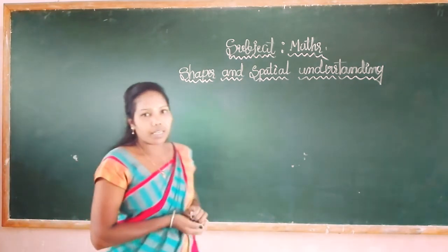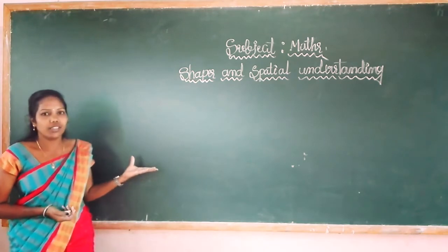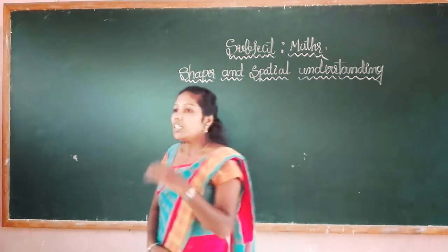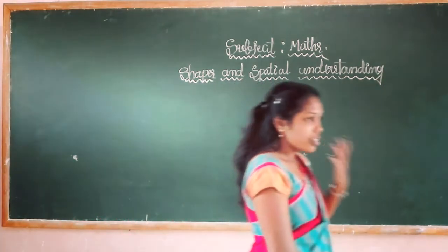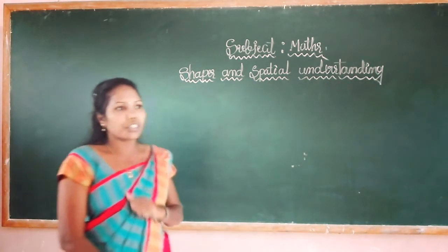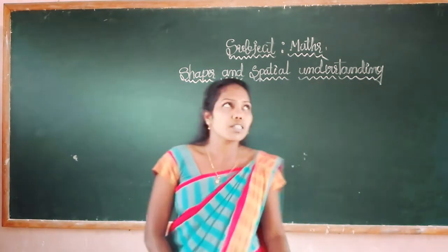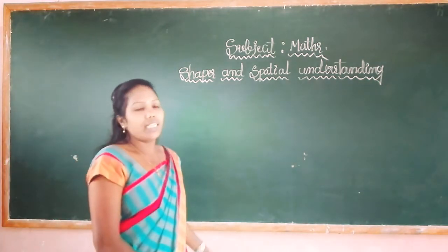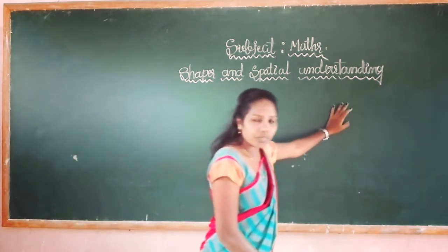Good morning dear students. I am Sakamayan, faculty of Mathematics. In the previous class we learnt what is straight lines, how do we draw straight lines, different kinds of lines, what is two-dimensional shapes and their features, the similar objects for 2D shapes and features of geometry. Today we are going to learn about 3D shapes. It is the last part of unit number 1: shapes and spatial understanding.